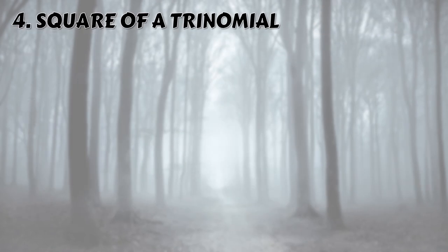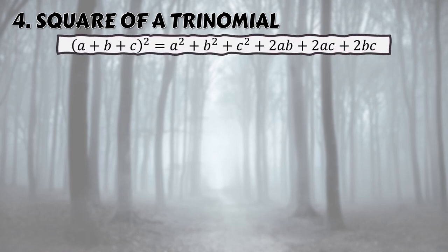The fourth special product is the square of a trinomial. Unlike the square of a binomial (two terms), here we square an expression with three terms. The formula is: (a + b + c)² = a squared + b squared + c squared + 2ab + 2ac + 2bc. We need to follow this formula carefully to avoid confusion.